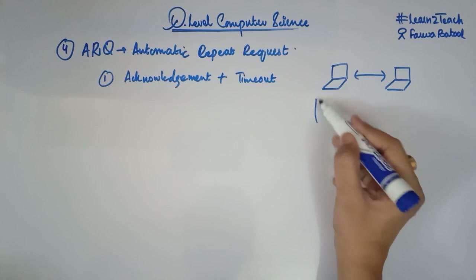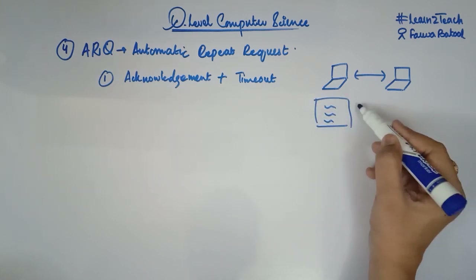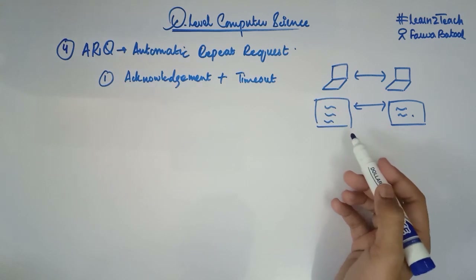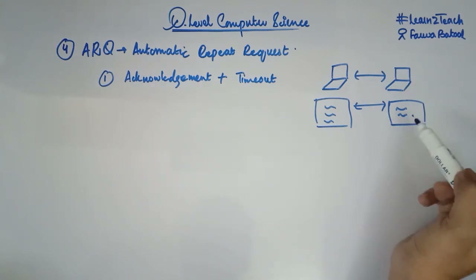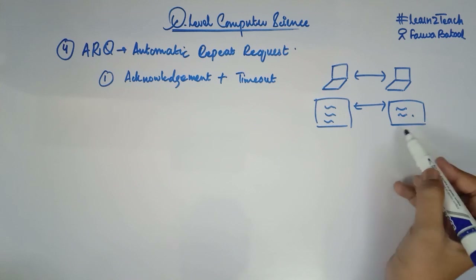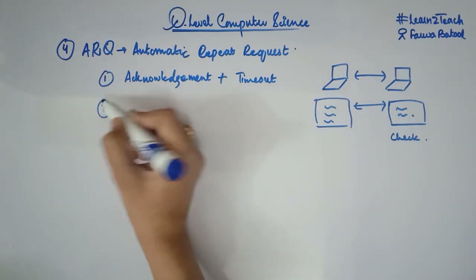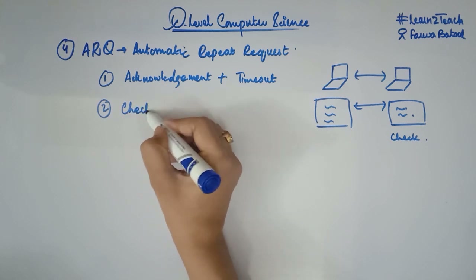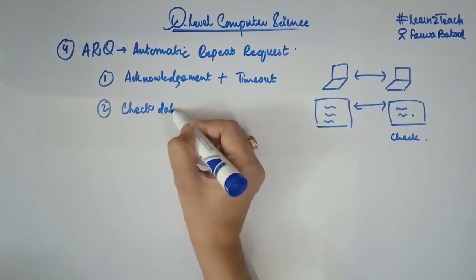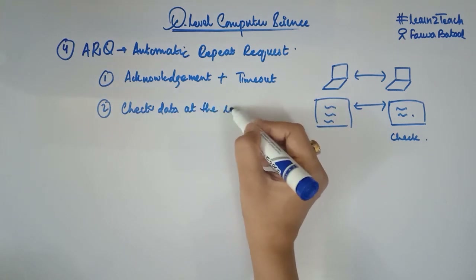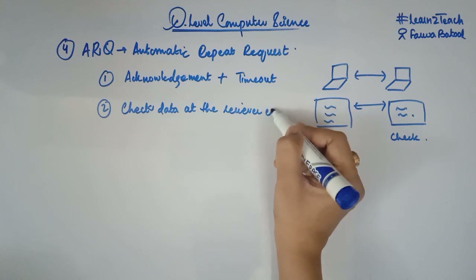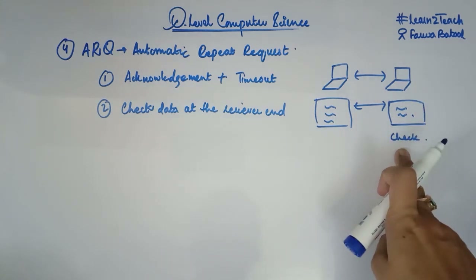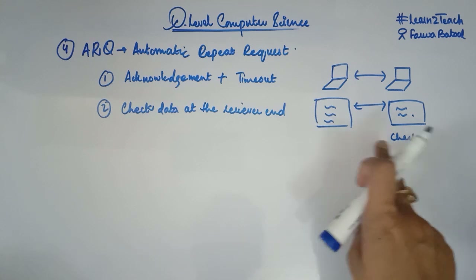Let's suppose we have a packet that is being transmitted from sender to receiver. This is the data being transmitted. Once the receiver receives the data, it is going to check — check the data at the receiver's end. When the data has been received, the receiving device is going to check whether the data has been transmitted correctly or not.